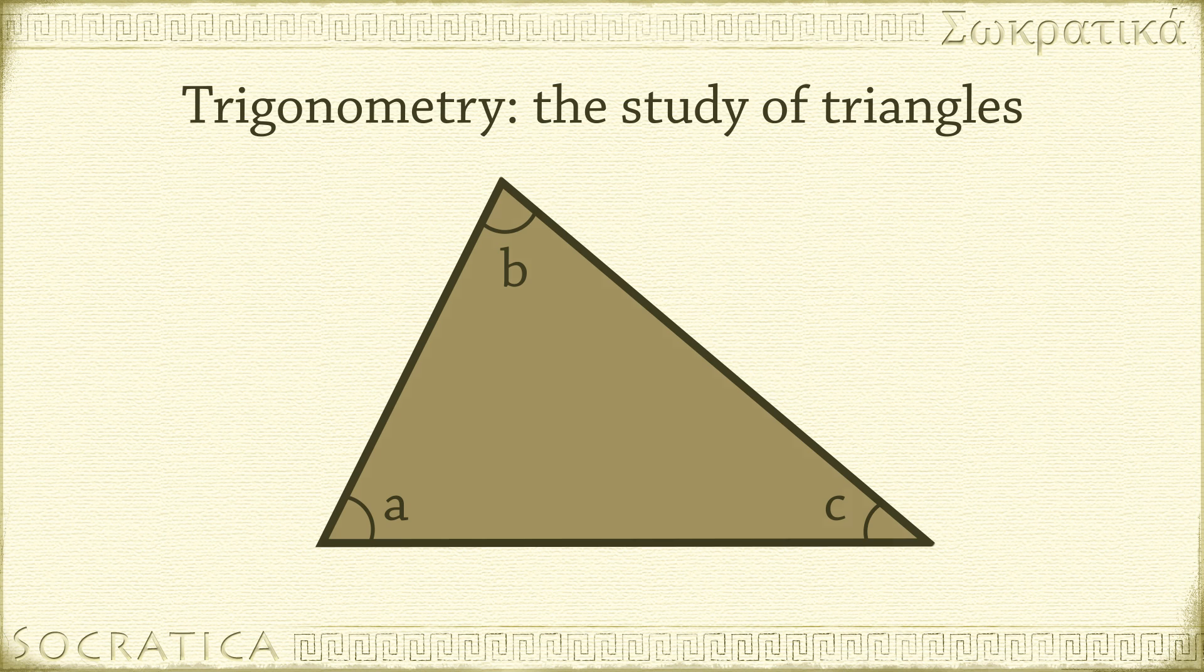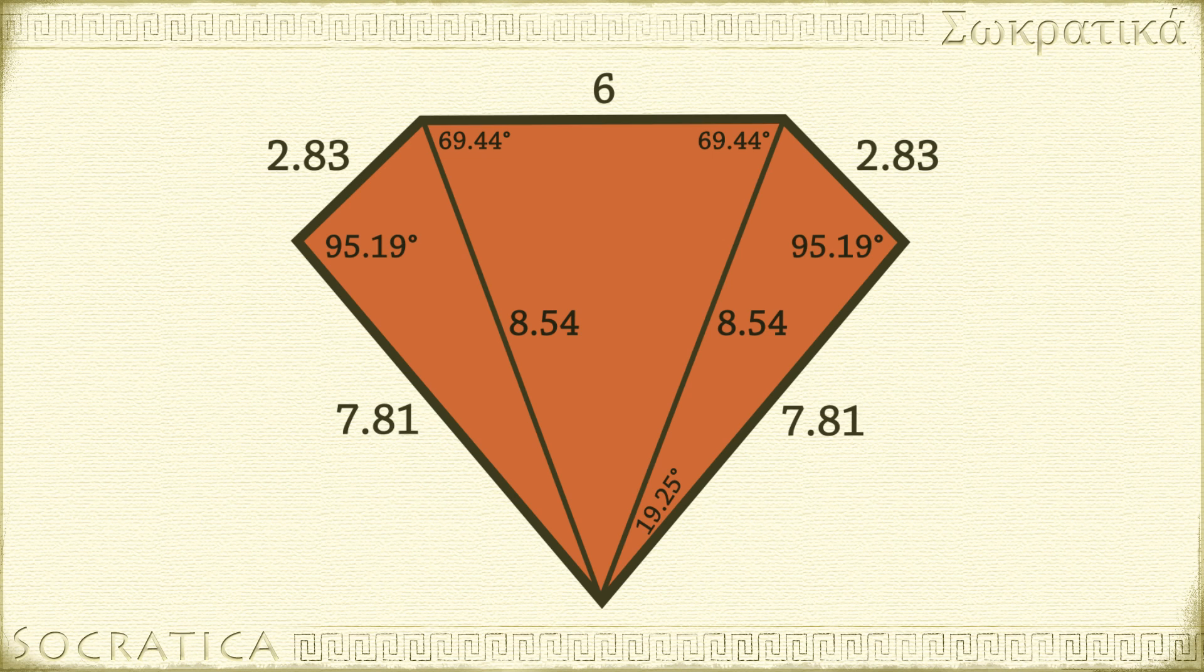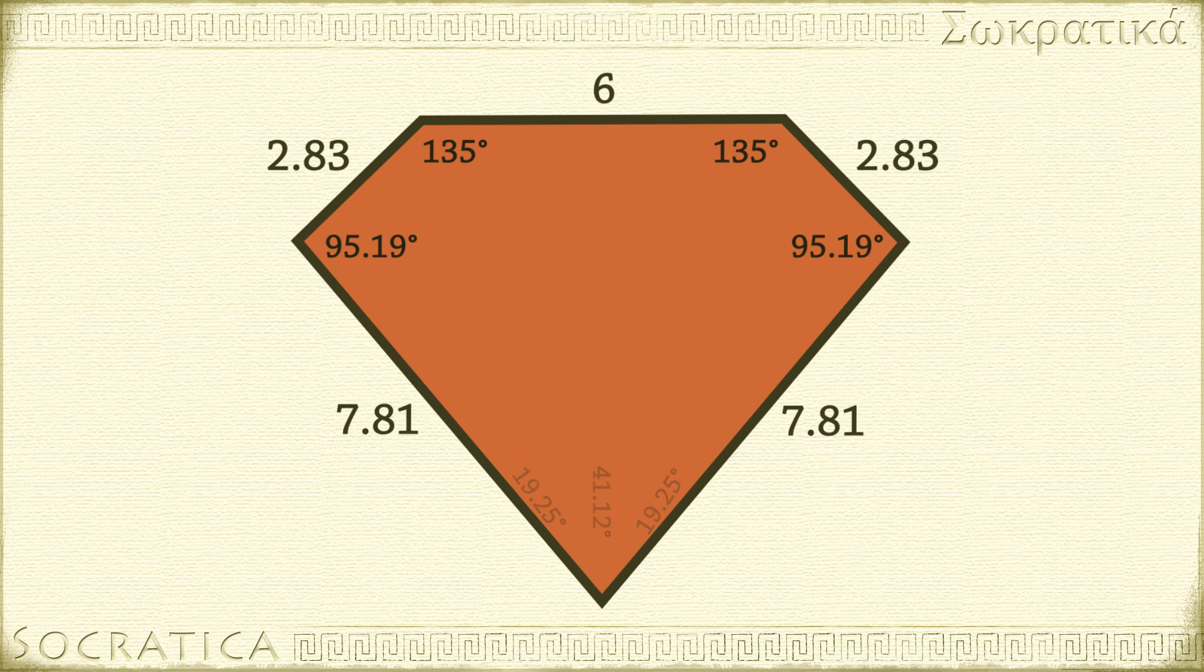One reason triangles are so essential is that more complicated shapes can often be cut into triangles. You can use trigonometry to find the sides and angles of the triangles. Then you can piece together this information to find the sides and angles of the original shape.